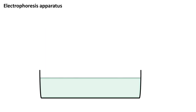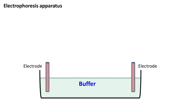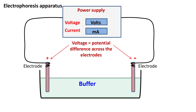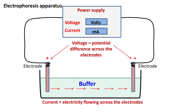Electrophoresis is carried out in a buffer, and the electric field is applied using electrodes which are attached to the power pack. Remember, the power pack shows two readings: one is the voltage, which is the potential difference across the electrodes, and the other is the current, which is the flow of electricity across the electrodes.